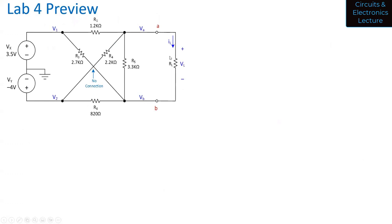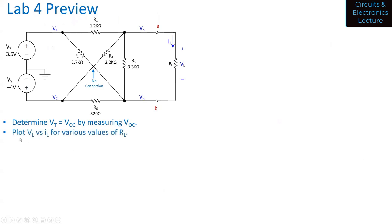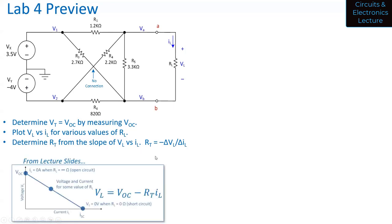Here's that circuit again. What you're going to do is determine V_T by measuring V_OC. In the pre-lab you're going to analyze the circuit, but in lab you're going to measure V_OC. That means don't connect anything to the terminals — remove R_L and just measure with a voltmeter the voltage between A and B. That's V_OC. Then you're going to plot V_L versus I_L, the load voltage versus the load current, for various values of R_L.